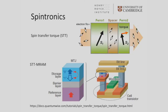An alternative could be to use an effect called spin transfer torque. If we have an unpolarised current and we pass that through a ferromagnet, the electrons become spin polarised. This current can then exert a torque on a second ferromagnetic layer and rotate that magnetisation. So we're influencing the magnetic state by the application of a current, which is vastly more energy efficient.